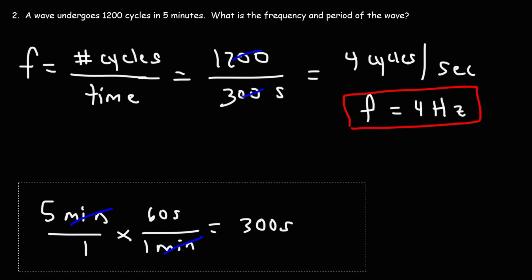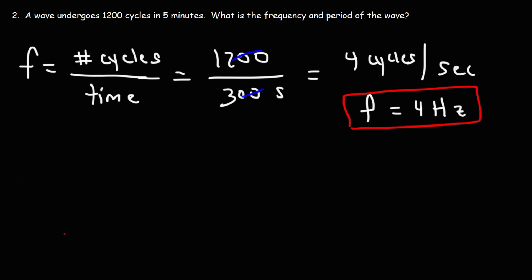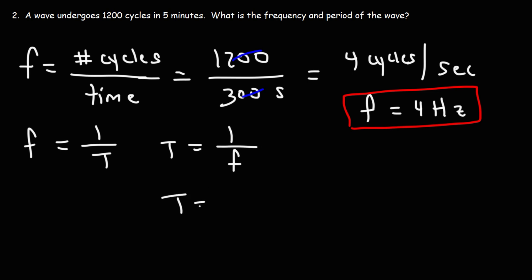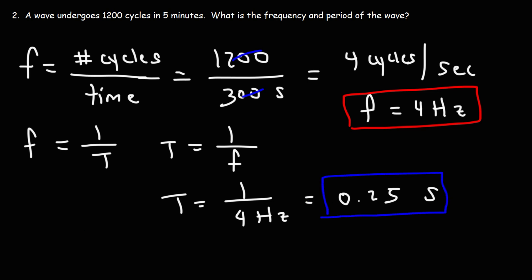Now that we have the frequency, we can calculate the period. The period is one over the frequency, so 1 over 4 Hertz equals 0.25 seconds. That's how you calculate the frequency and period of this wave.